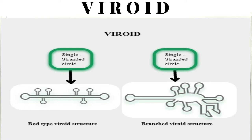According to NCERT: in 1971, T.O. Diener discovered a new infectious agent that was smaller than viruses and caused potato spindle tuber disease. It was found to be free RNA - it is free RNA.